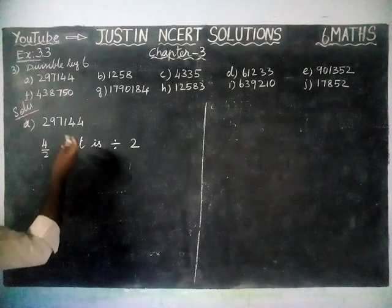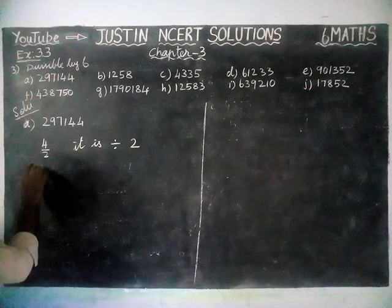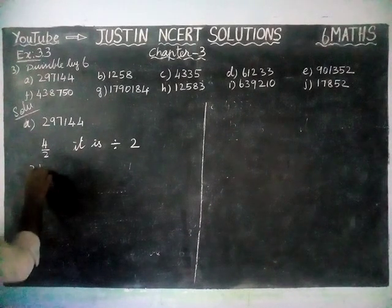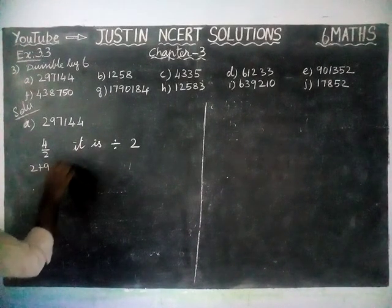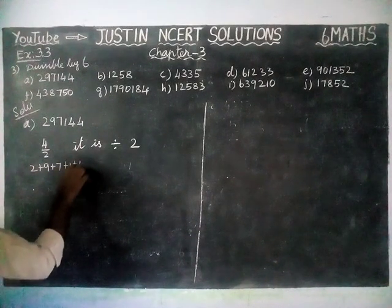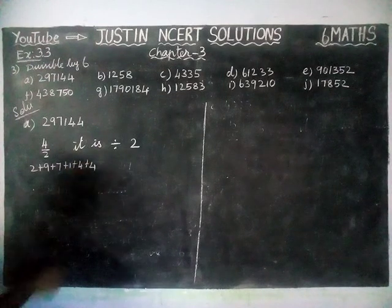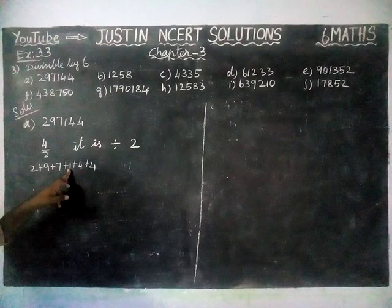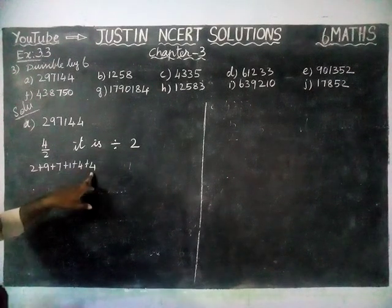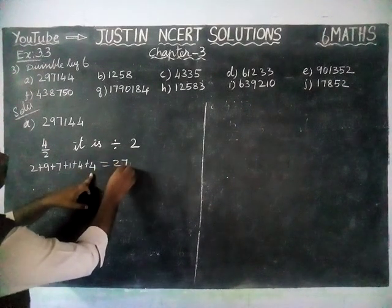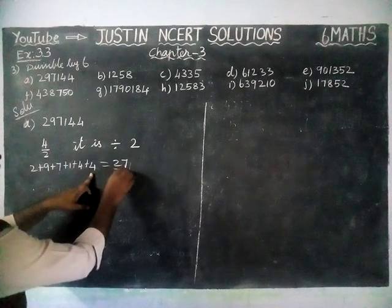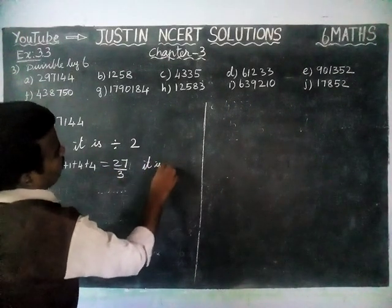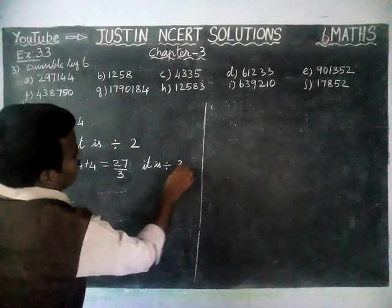Next, we are going to check if it is divisible by 3. The sum of its digits is divisible by 3, then this number is divisible by 3. So, 2 plus 9 plus 7 plus 1 plus 4 plus 4. When we add these, we get 27. This 27 is divisible by 3. Therefore, the number is divisible by 3.